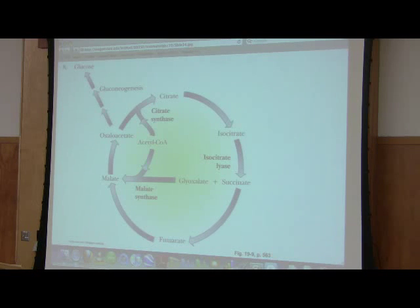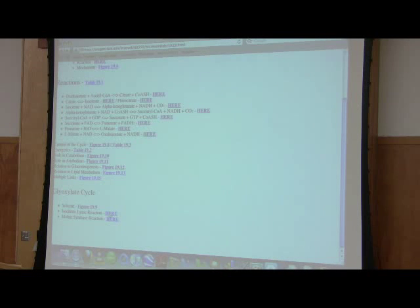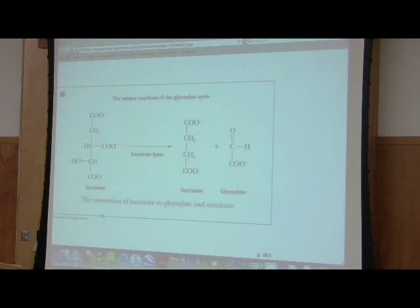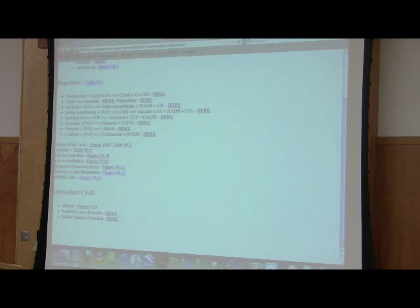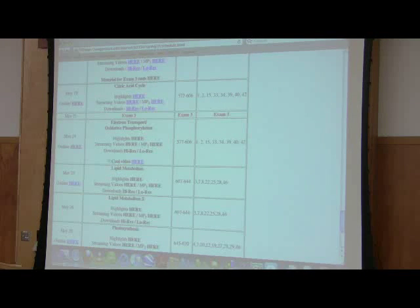Okay? Clear as mud. That is the glyoxylate pathway. There's the isocitrate lyase reaction. The sixth carbon goes to a 4 plus a 2. And here's the malate synthase reaction. Glyoxylate plus acetyl-CoA is giving us malate. Well, that's what we need to say about the citric acid cycle.